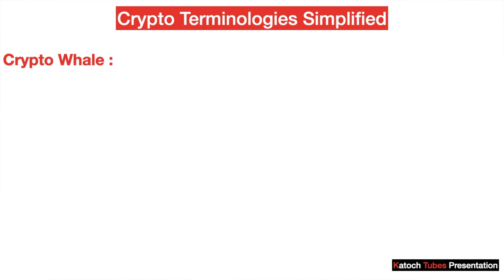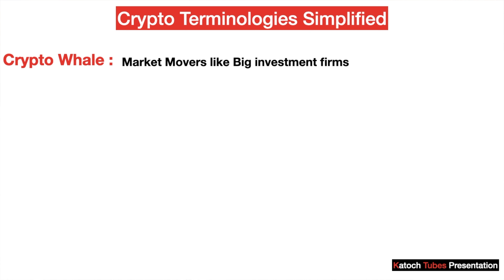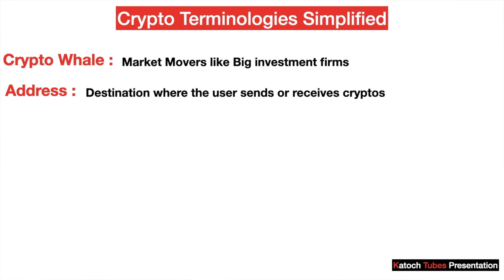Crypto whales are the market movers. Just like Elon Musk is a big whale — when he bought billions of dollars worth of cryptocurrency, which is Bitcoin, he moved the market upwards in an uptrend. Address is a destination where you send or receive your cryptocurrency. ATH means all-time high value of that coin.